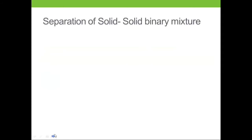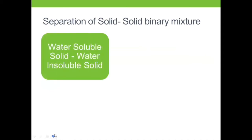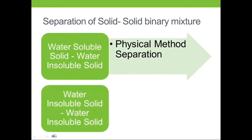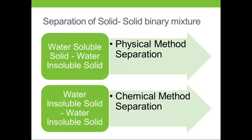What could be the types of solid-solid mixtures based on solubility? If one component is water-soluble and the other is water-insoluble, separation involves a physical method — dissolution in water. For mixtures where both components are water-insoluble, the separation depends on reacting with an added reagent, and this is known as a chemical method of separation.